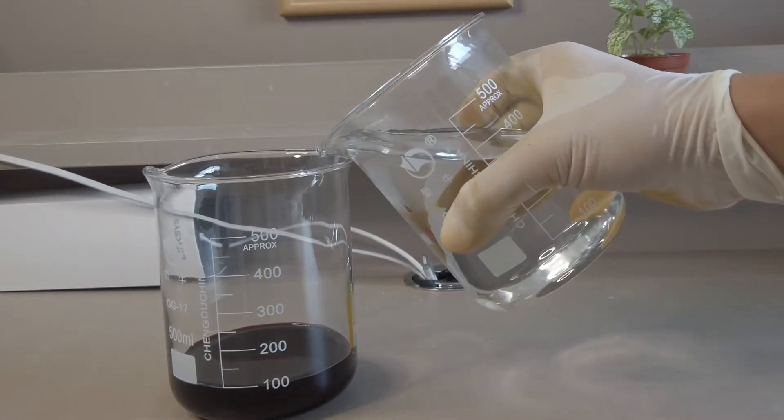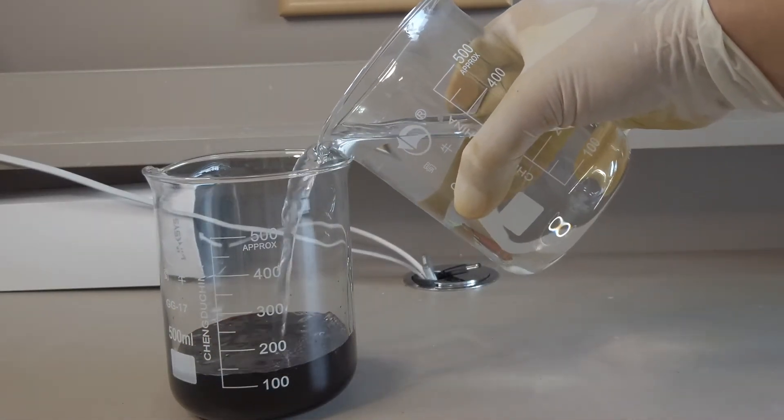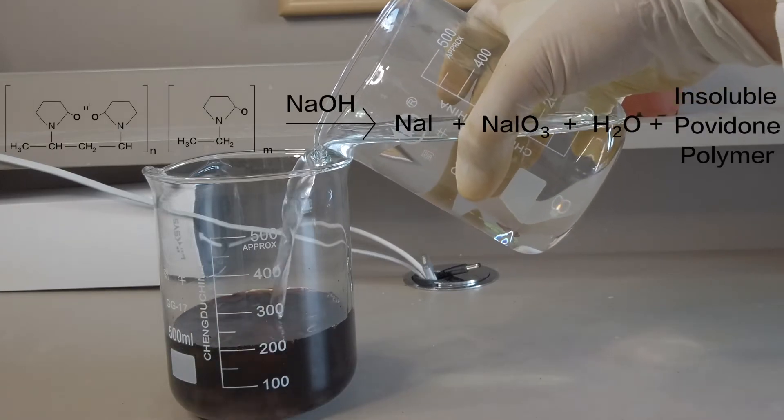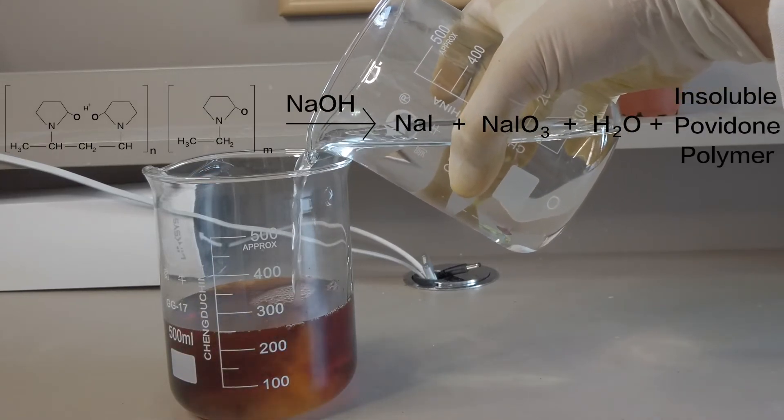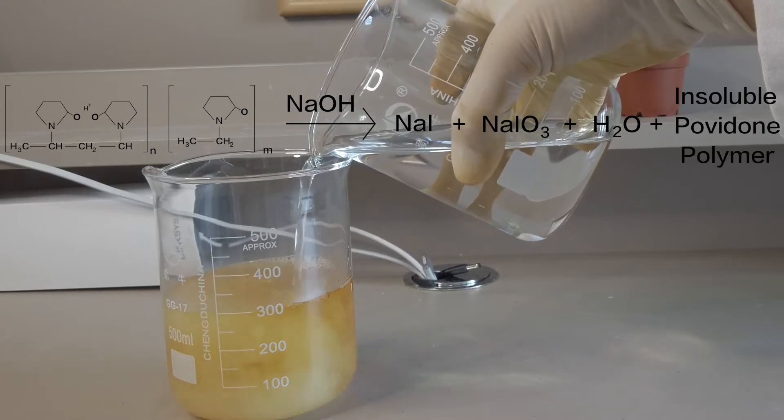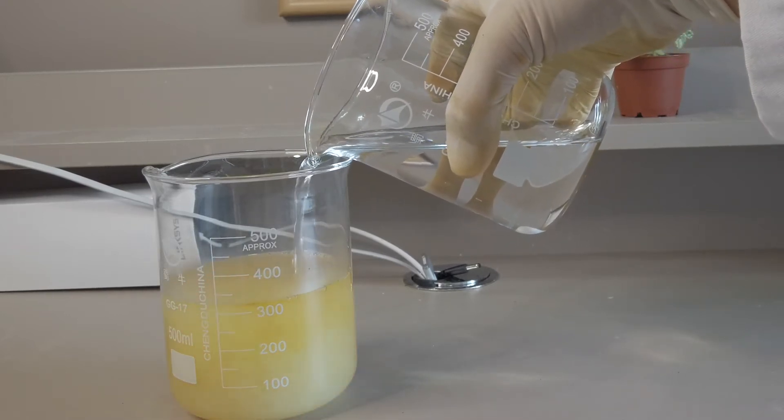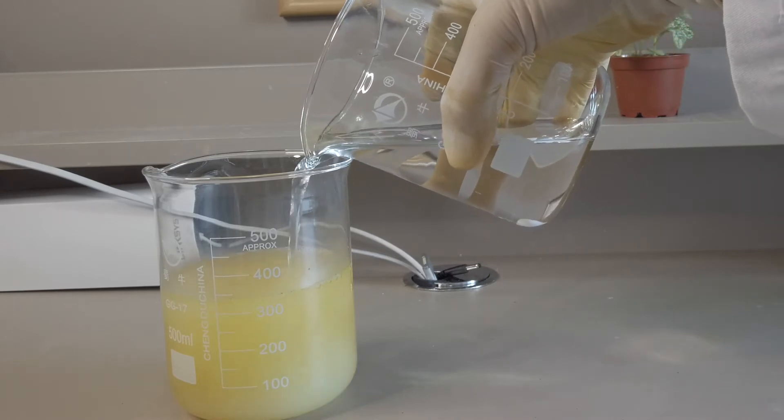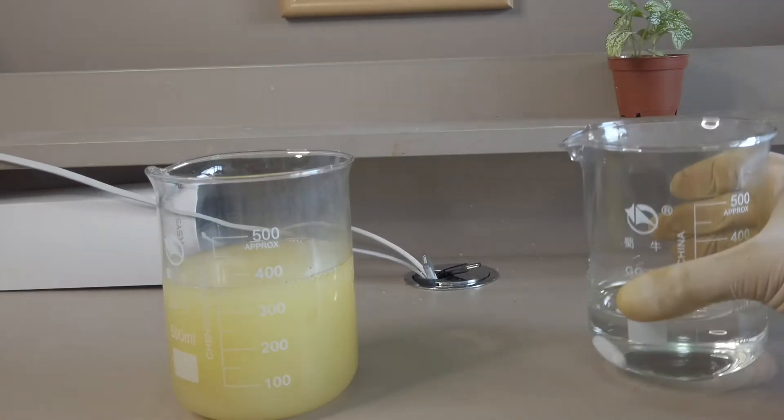Upon the addition of a strong base, the iodine is converted to its ion form while the water-soluble povidone is precipitated out as a water-insoluble polymer. As the concentration of the brown iodine decreases, the solution is slowly decolorized causing the solution to take on the yellow color of the insoluble polymer.